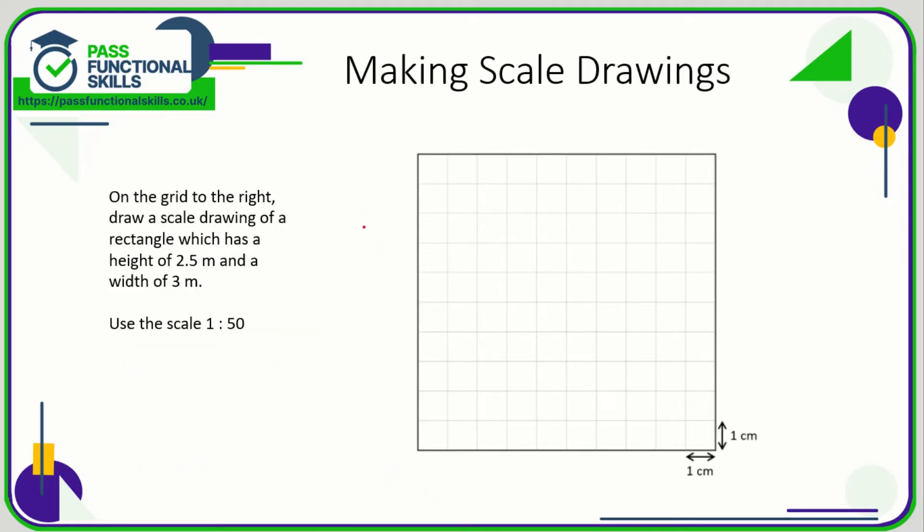Let's take a look at another example. We've got a rectangle 2.5 by 3 meters, and we're using a scale of 1 to 50 on this centimeter grid. So first I'm going to work out how many centimeters the dimensions of this rectangle are: 2.5 meters is 250 centimeters, 3 meters is 300 centimeters.